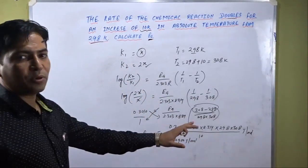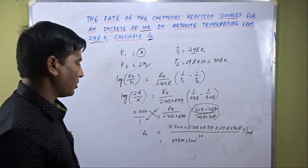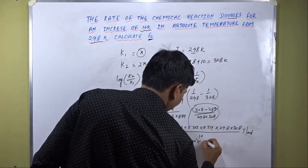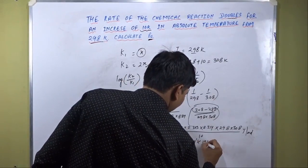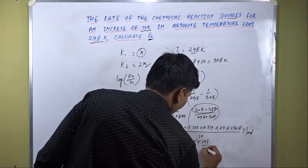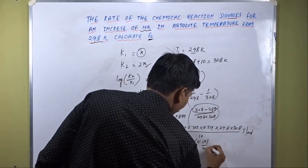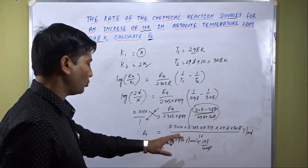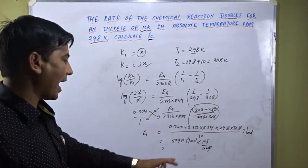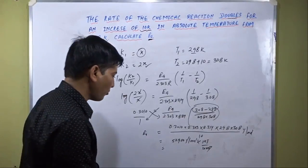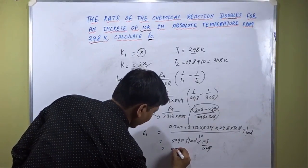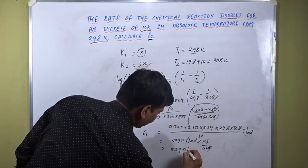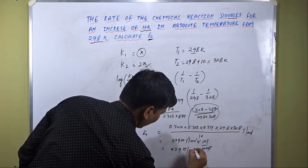We can also convert joules per mole into kilojoules per mole. Since 1 kJ equals 1000 joules, the joules cancel out. Dividing 52,900 by 1000, the value we get is 52.9 kilojoules per mole.